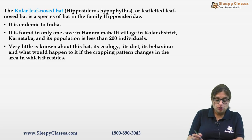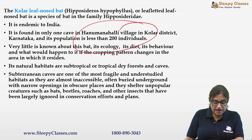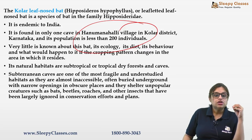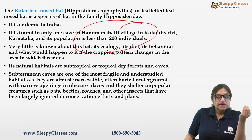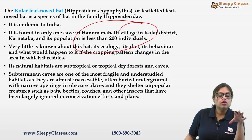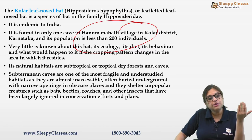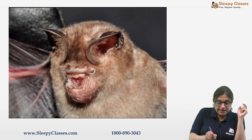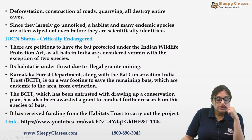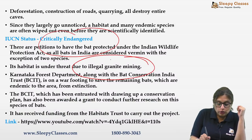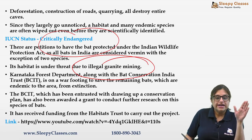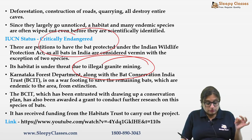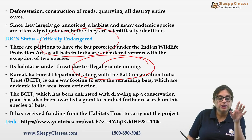Not much is known about the Kolar Leaf-nosed Bat because it lives in subterranean caves that are highly isolated and inaccessible — even where there is an opening, it would be narrow and obscure. The species has not been extensively studied. It has characteristic leaf-like structures — hence 'leaf-nosed bat.' IUCN status is critically endangered, threatened by illegal granite mining. However, it does not appear in Schedule 1 of the Wildlife Protection Act because bats are classified as vermin — with the exception of two species.